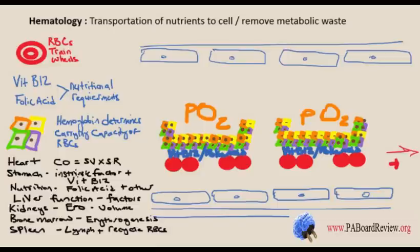You also have to think about nutrients like folic acid and liver function factors. If your liver isn't functioning correctly, it can't build clotting factors — think about alcoholics or hepatitis. Kidneys produce EPO depending on how much volume is reaching them. You have to consider bone marrow and erythropoiesis — whether mature or immature blood cells are being generated. And then the spleen: it's a big lymph node but also recycles red blood cells.